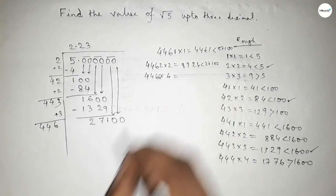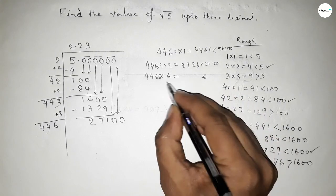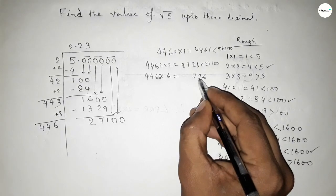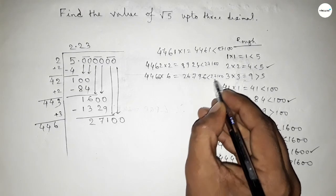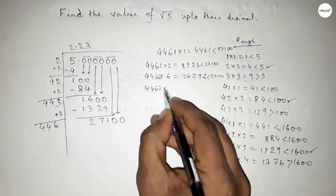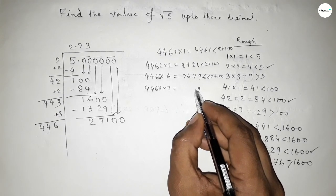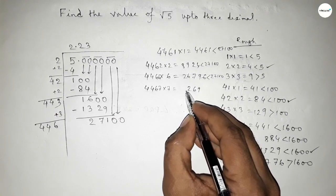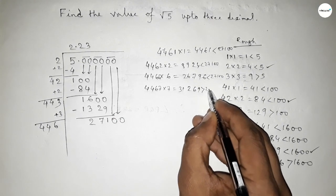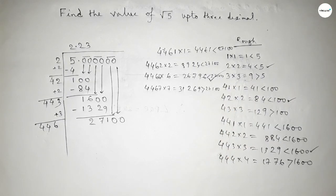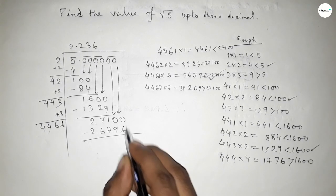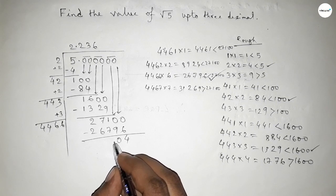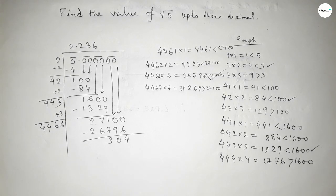If we put 6, so 4466×6=26796, which is less than 27100, so we should take here 6. So here 26796. Now subtracting this, so this is 304.